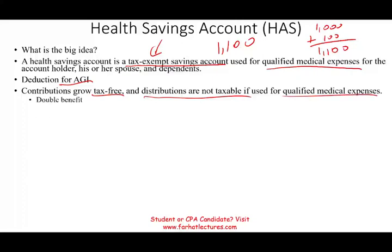Notice you have a double benefit. In contrast to your retirement account — for example, a 401k — you put your money away and it grows tax-free, but when you distribute it, it's taxable. For the health savings account, it's a double benefit: it goes in tax-free and it goes out tax-free, as long as it's for qualified medical expenses.